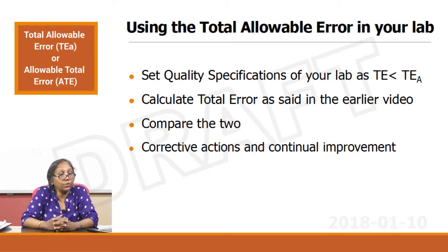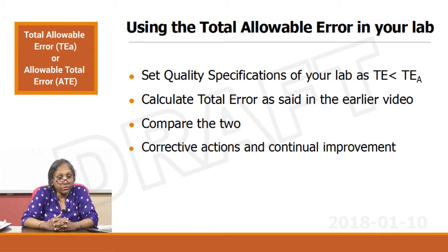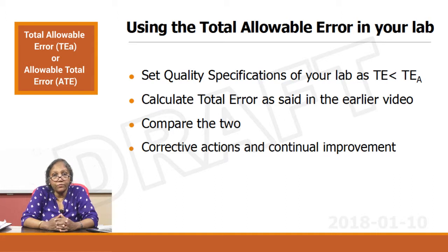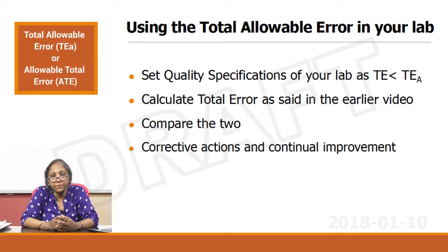How will you use the total allowable error in your laboratory? First, set the quality specification: decide that your TE will be less than TEa. Calculate the total error as described in the earlier video and compare the two. If you are not able to limit your TE, take remedial actions and preventive actions — that is your path to continual improvement. That is the importance of understanding TEa and TE.